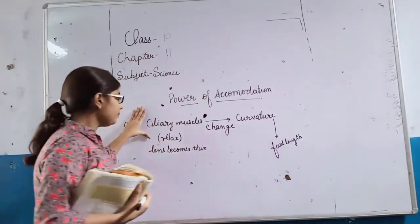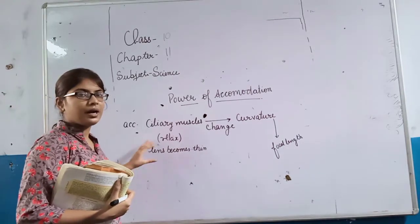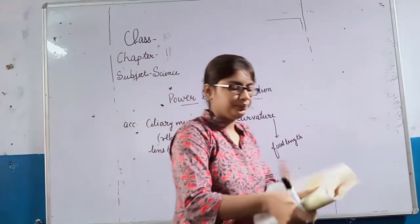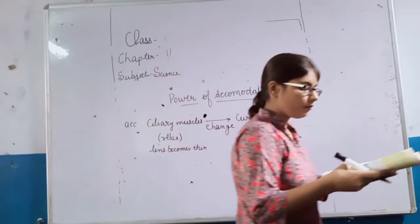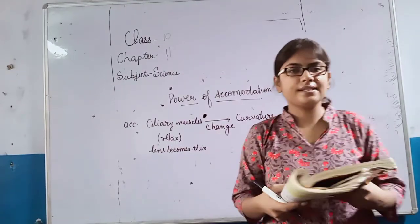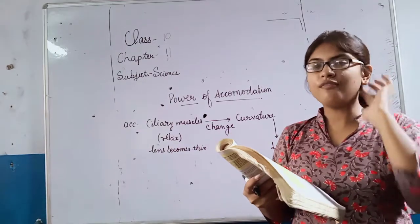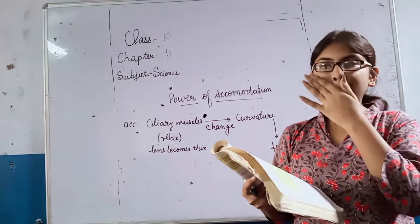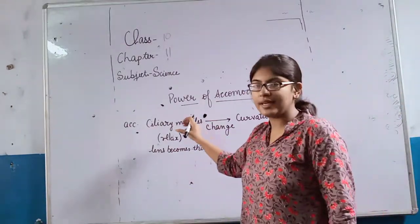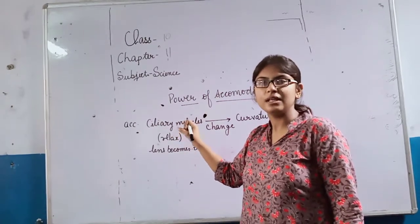If the ciliary muscles are relaxed, the lens becomes thin. Thus its focal length increases. When the ciliary muscles are relaxed, the focal length increases.